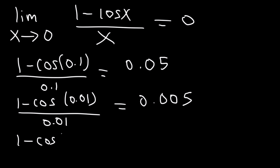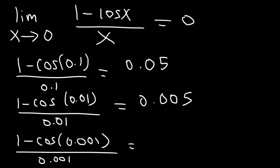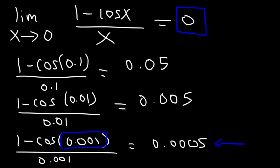Just to confirm it, let's try an even smaller number, 0.001. This will be 0.0005. As we can see, as x gets closer and closer to 0, y approaches 0 as well. So this equation holds true.